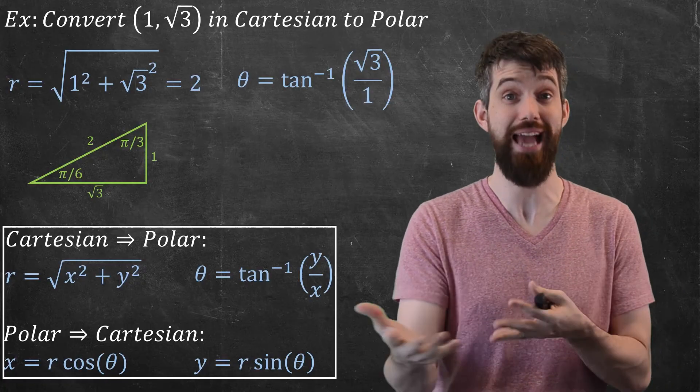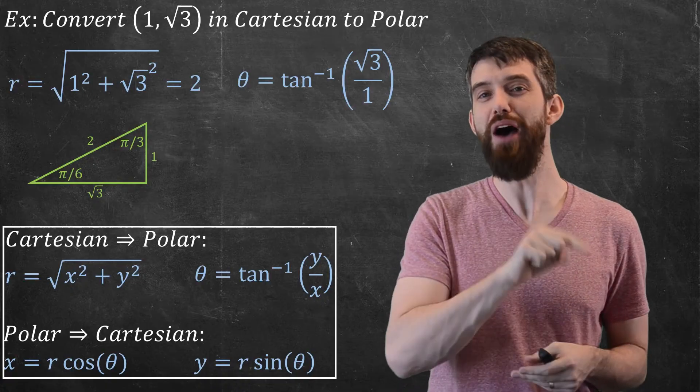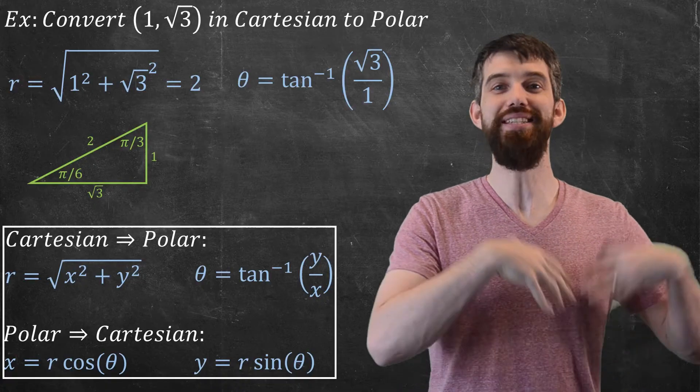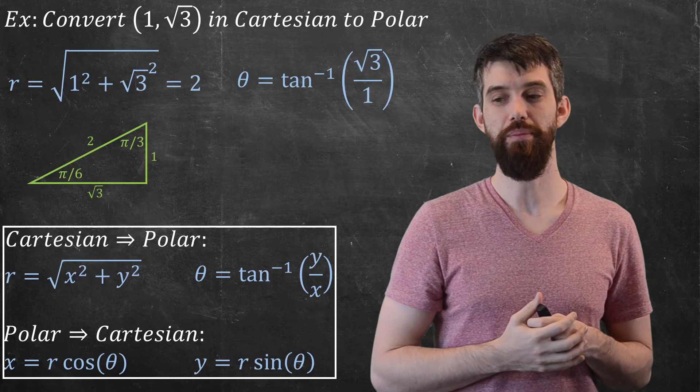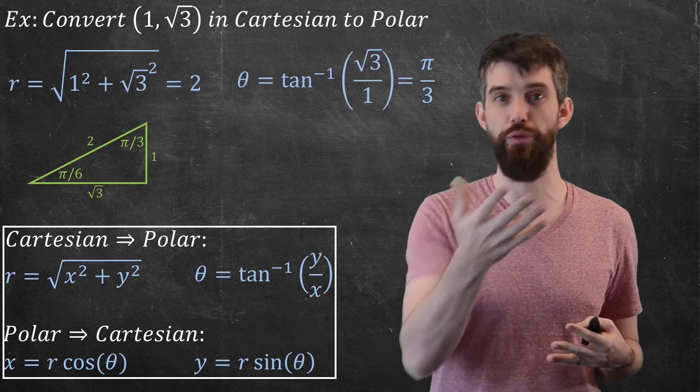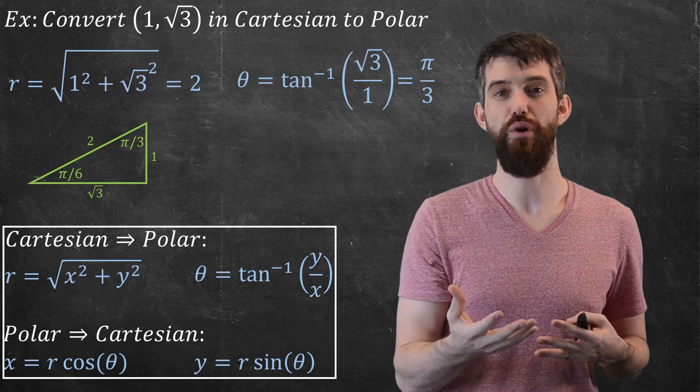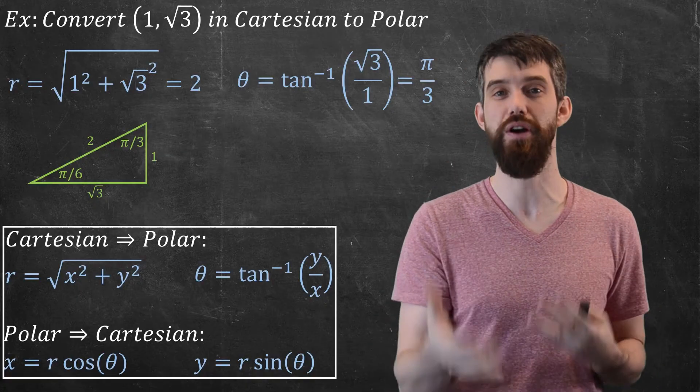And then if I consider tangent, remember theta is equal to arctangent, so I'm going to consider tangent first. And the question is, what value of theta has tan of that value equaling √3 over 1? In this case, it's π/3. Indeed, if you took tangent of π/3, you get √3 over 1, and therefore arctangent of √3 over 1 is π/3. They're inverse functions.